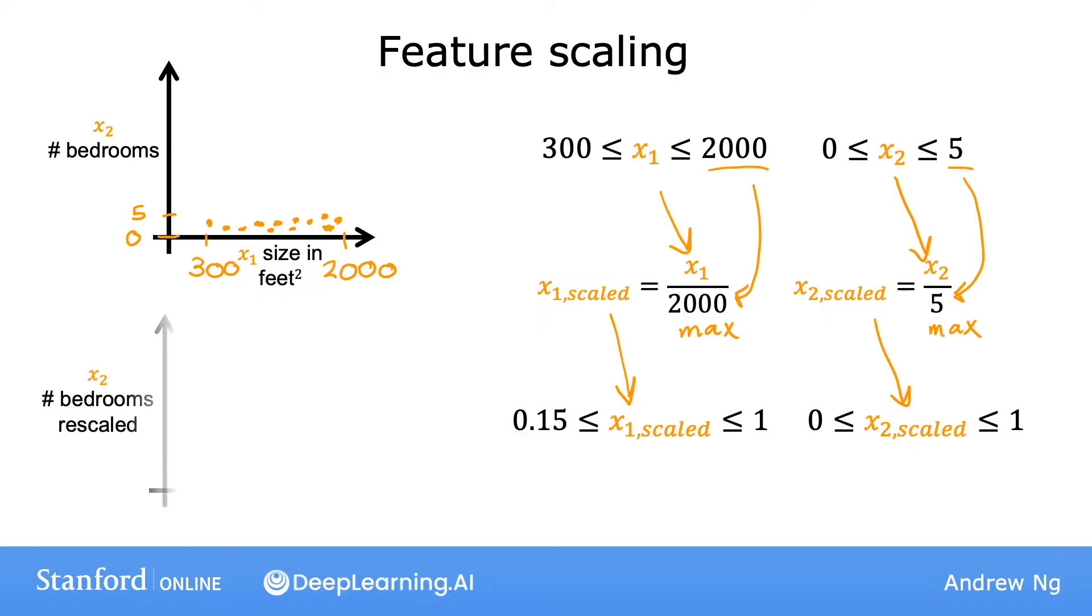So if you plot the scaled x1 and x2 on a graph, it might look like this.